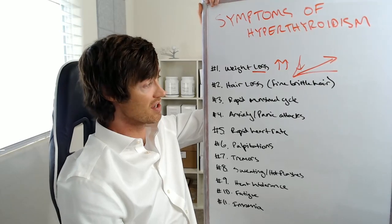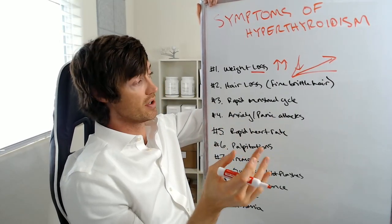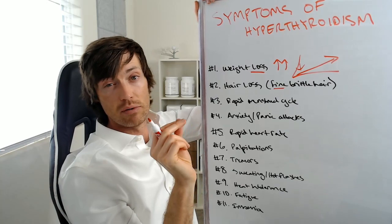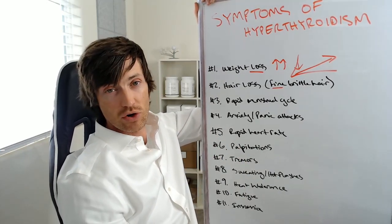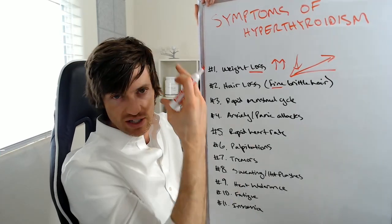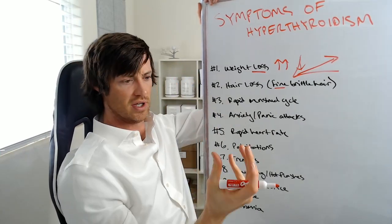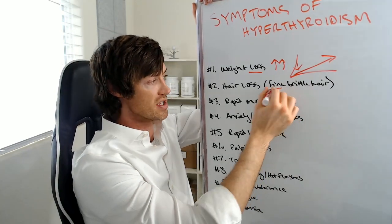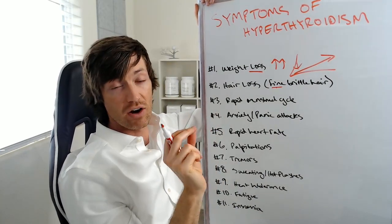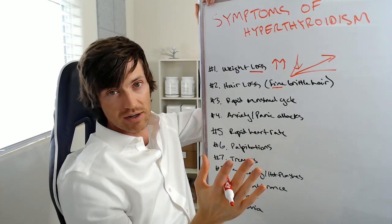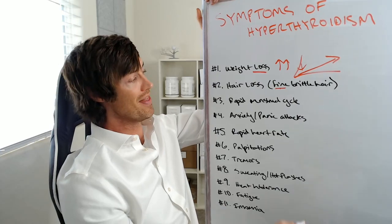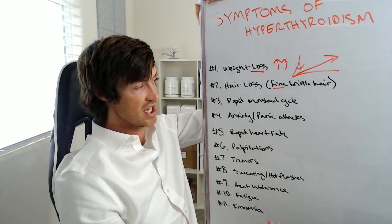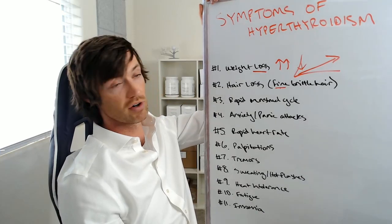The next thing that can happen is hair loss. Both low thyroid and high thyroid can cause hair loss, but the hair loss in hyperthyroidism is different — it results in fine, brittle hair that breaks, cracks, and falls out. The hair loss in hypothyroidism is a little different; it just sort of falls out when you're showering or combing your hair. But in hyperthyroidism, the quality and texture of your hair actually changes and it can snap or break right in the middle of the shaft — not split ends. This is a sign that your hair follicles are cycling through their growth phase too quickly.